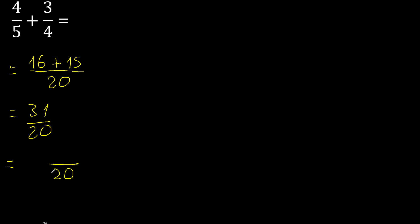20 — 20 multiplied by which number is nearest to 31 but not greater? 20 multiplied by 2 is 40, and 40 is greater. Multiply by 1 is 20.